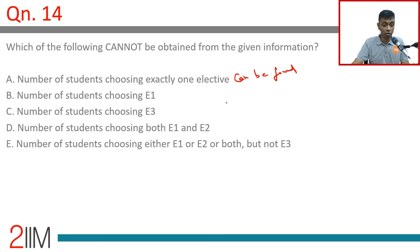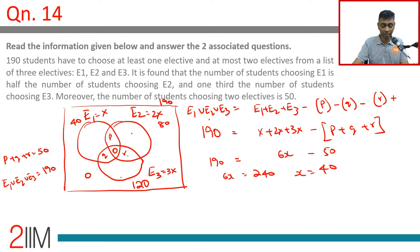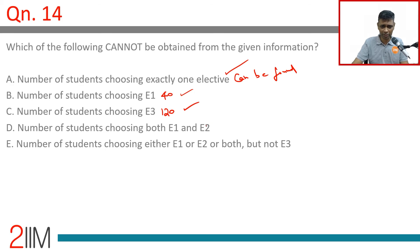Number of students choosing e1: this is 40, this can be found. E3: 120, this can be found. Number of students choosing both e1 and e2: e1 and e2 is p. You know p plus q plus r is 50, this can't be found. This is our answer.